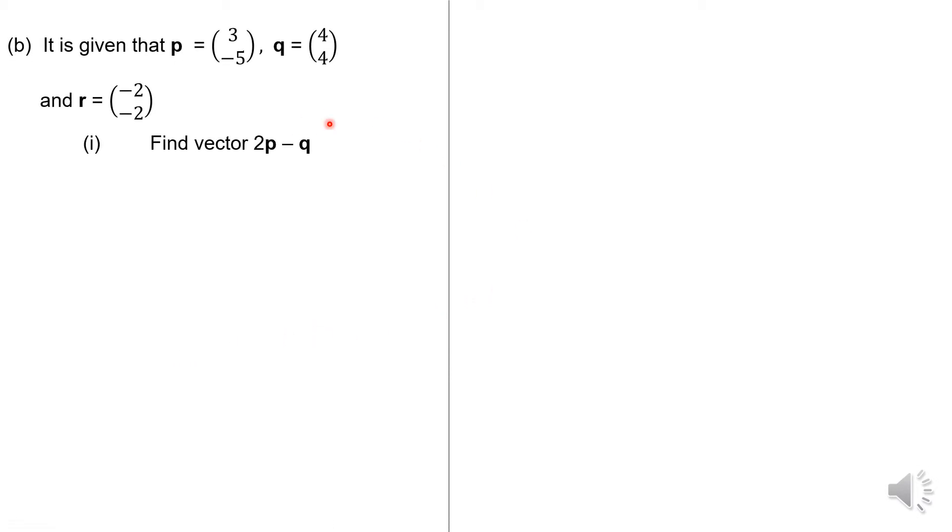Then the same question had further vectors P given to you as a column vector 3, negative 5. Q is 4, 4. R is negative 2, 2. So here is going to be you multiply vector P by that scalar quantity of 2. And you minus Q then. So when you have a scalar of 2, you multiply that scalar. 2 times 3 gives you 6. And 2 times negative 5 gives you negative 10. So from here, you can add and subtract. So 6 minus 4, that gives you 2. And negative 10 minus 4, that gives you negative 14. And that's all that you had to do for this particular question.